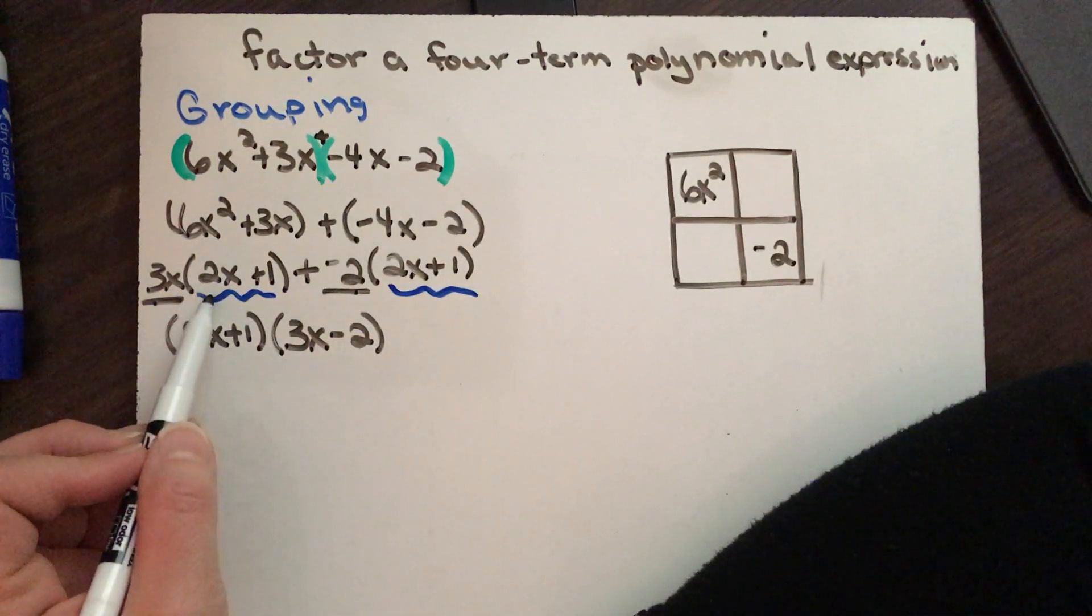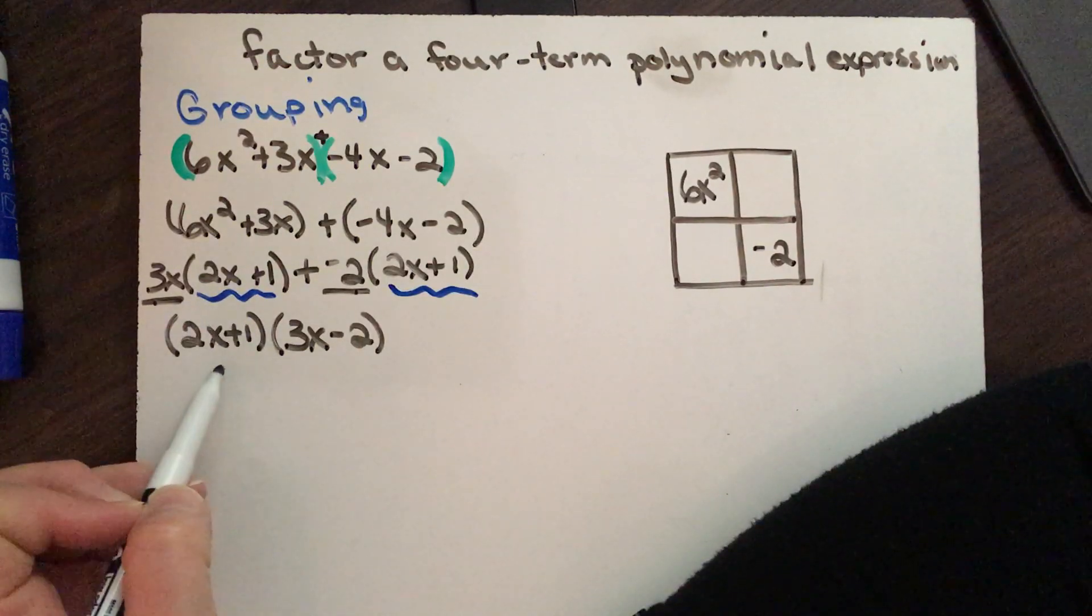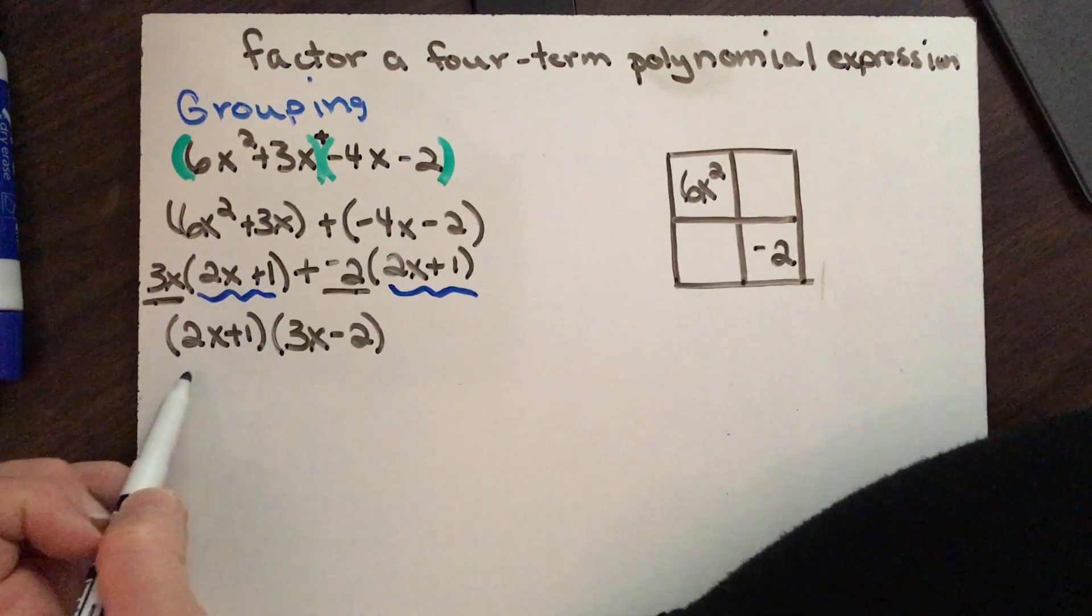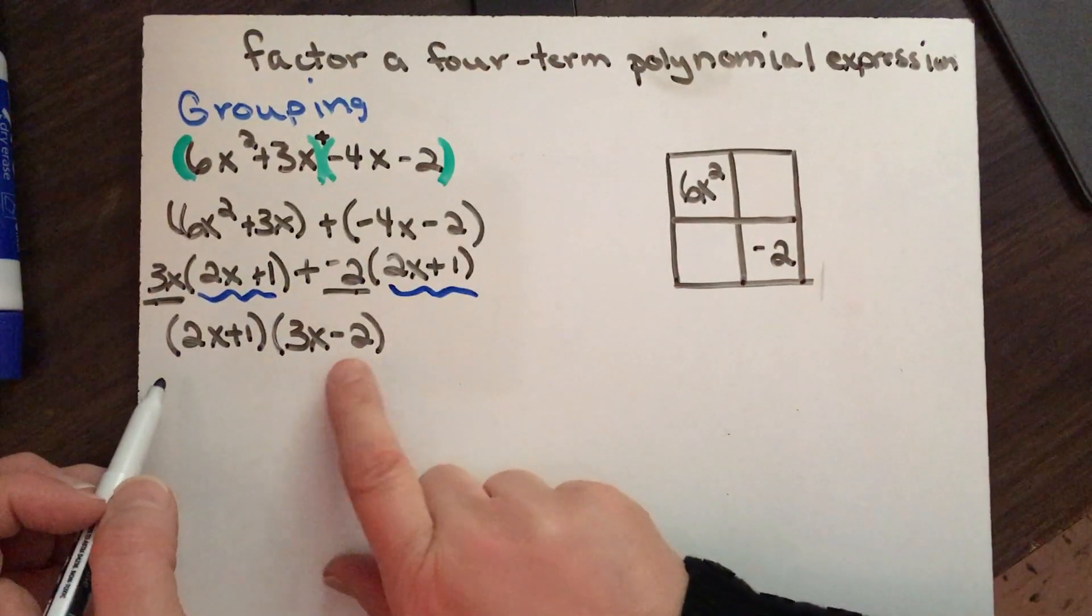I can do this because this is multiplied to this and this is multiplied to that, so it's this multiplied to both of these.